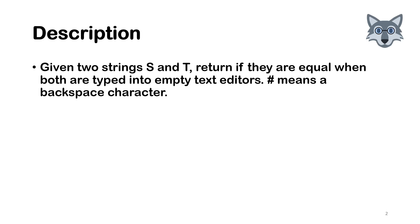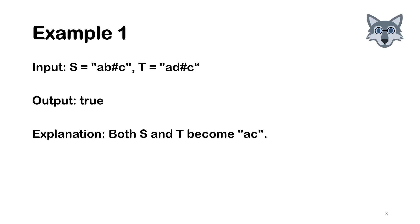If you're like me, you just skim over the description and understand the problem based on examples. Basically, the idea is: if you see a hashtag in a string, that means it's a backspace. So whenever you see a hashtag, you're deleting the previous letter. In this case, both strings become 'a' and 'c', so these two are equal, which means you return true.